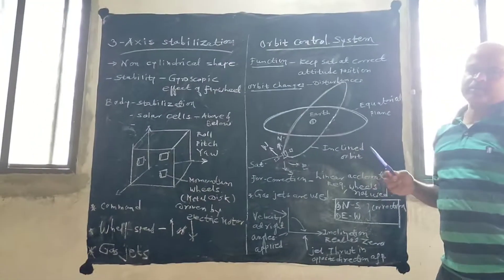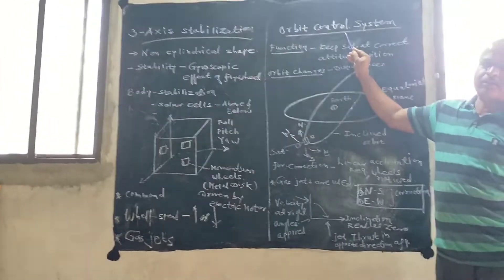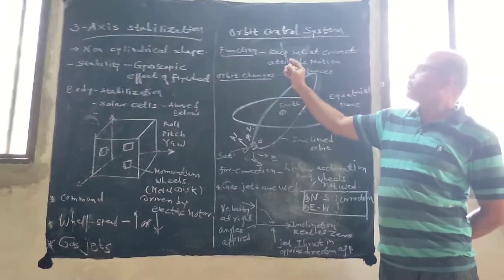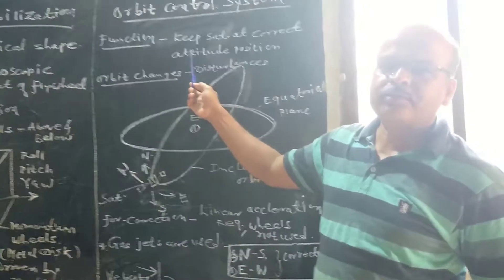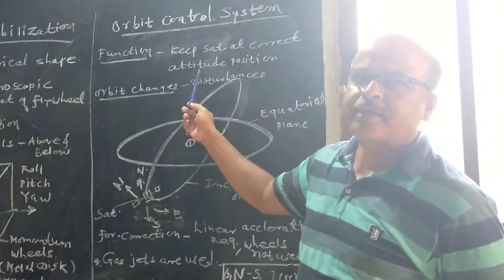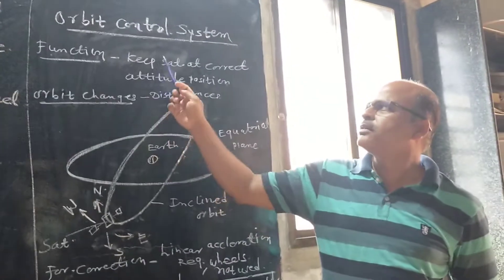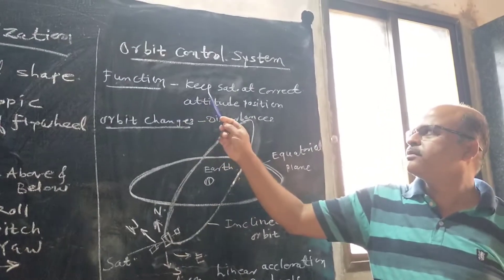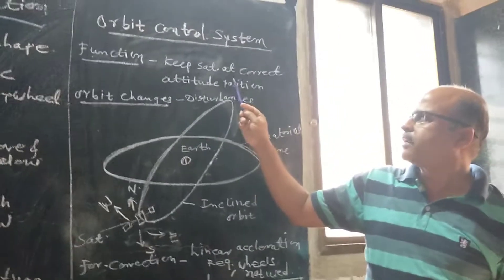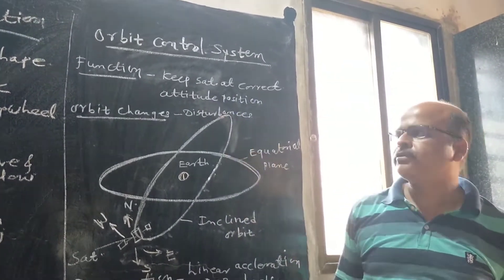Then next is an orbit control system. You have to control the orbit of satellite. As previously mentioned, orbit changes due to the different orbital perturbations. That is due to gravitational effect of sun and moon, atmospheric drag, earth's oblateness, then effect of sun transit outage, then solar eclipse, all this changes the satellite orbit. Therefore, function of this orbit control system is to keep satellite at correct attitude position.